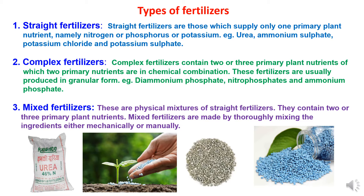Complex fertilizers are fertilizers which contain two to three primary plant nutrients, and these fertilizers are usually produced in granular form. Examples include diammonium phosphate, which supplies nitrogen and phosphorus; nitrophosphates, which also supply nitrogen and phosphorus; and ammonium phosphate, which supplies nitrogen and phosphorus.